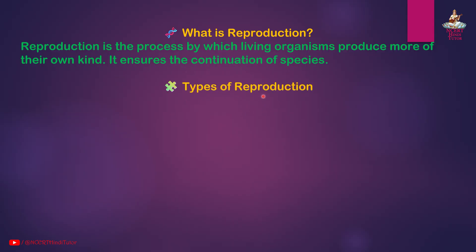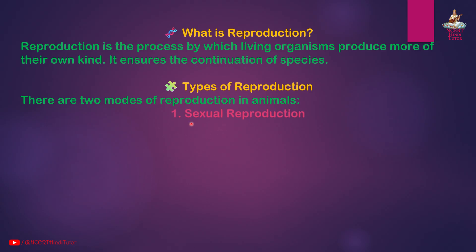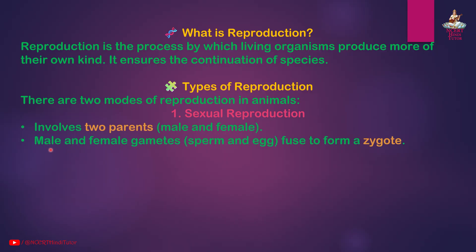Types of Reproduction: There are two modes of reproduction in animals. First, sexual reproduction involves two parents — male and female. Male and female gametes (sperm and egg) fuse to form a zygote. Examples: humans, dogs, hens.